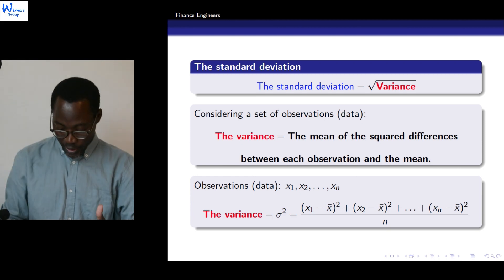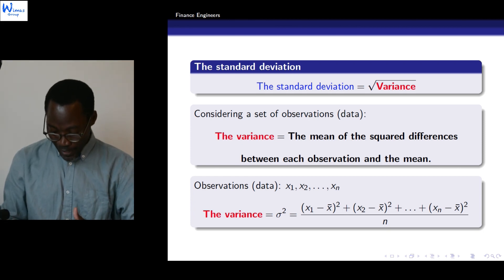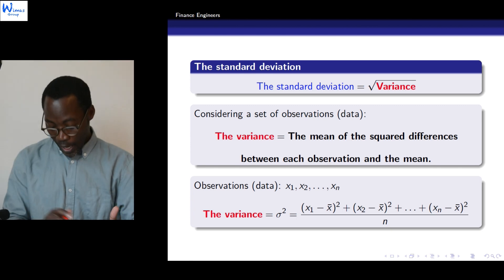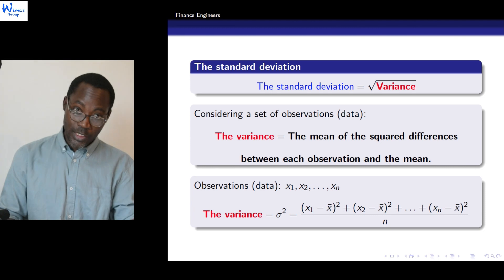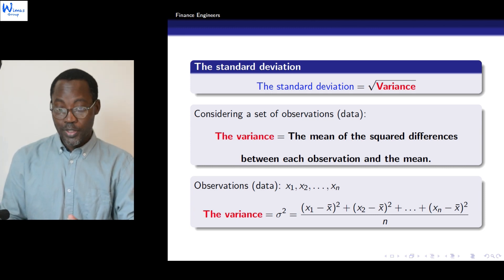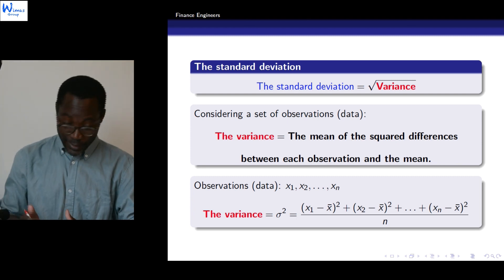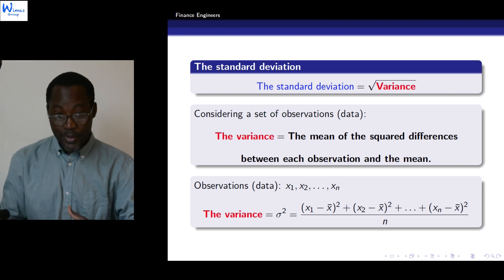We define the variance as the mean of the squared differences between each observation and the mean. So the mean we calculated in the first part. Then we will take the differences between each observation and the mean, we square them, then we compute the mean of those squares.